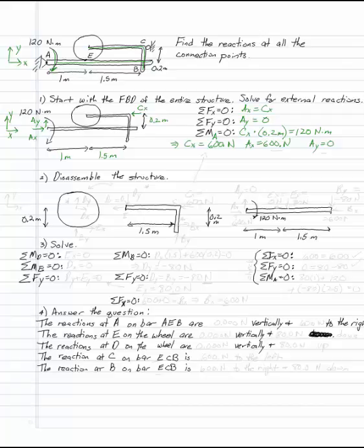Now, I've already got three of the things I need to know, but I can't get the others without disassembling the structure. So if I want to disassemble the structure, I'm going to have three different free body diagrams, all with this same Cartesian system.